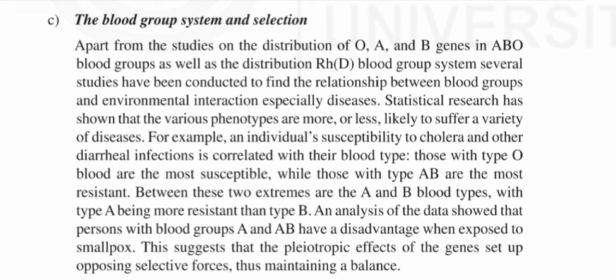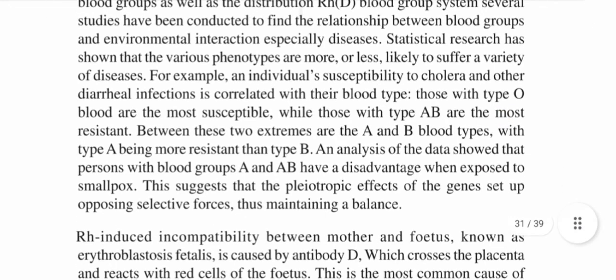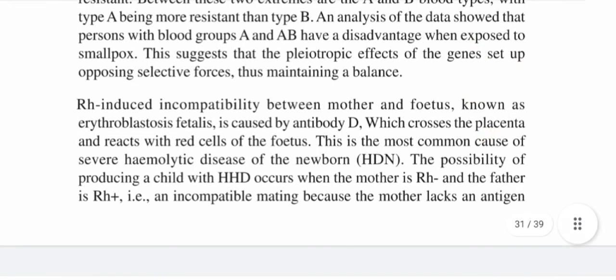This suggests that the pleiotropic effects of the genes set up opposing selective forces, thus maintaining a balance. Rh-induced incompatibility between mother and fetus, known as erythroblastosis fetalis, is caused by antibody D which crosses the placenta and reacts with red cells of the fetus. This is the most common cause of severe hemolytic disease of the newborn (HDN).